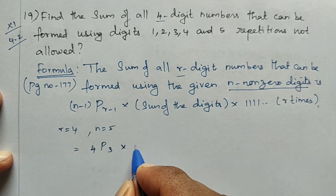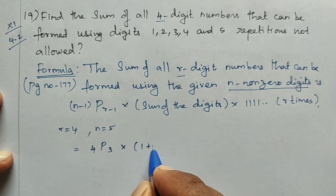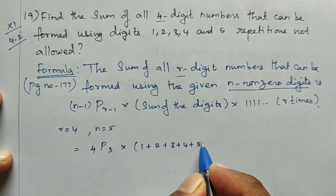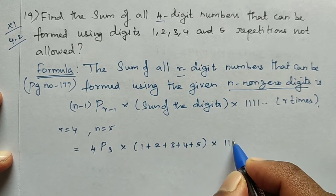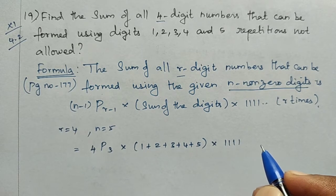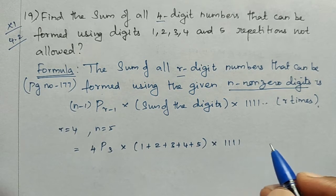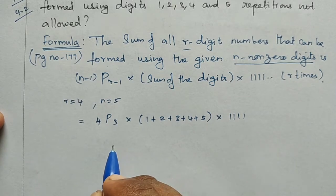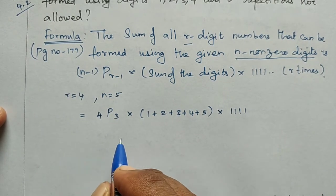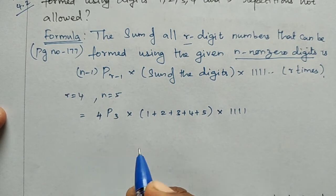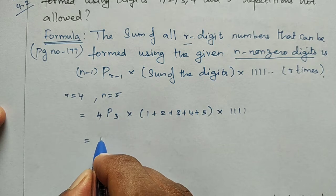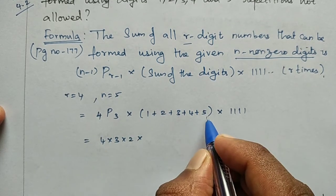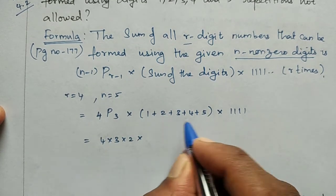The sum of the digits is 1 + 2 + 3 + 4 + 5. We write 1111 for 4 digits. Then (n−1)P(r−1) becomes 4P3. Solving: 4P3 = 4 × 3 × 2 = 24.